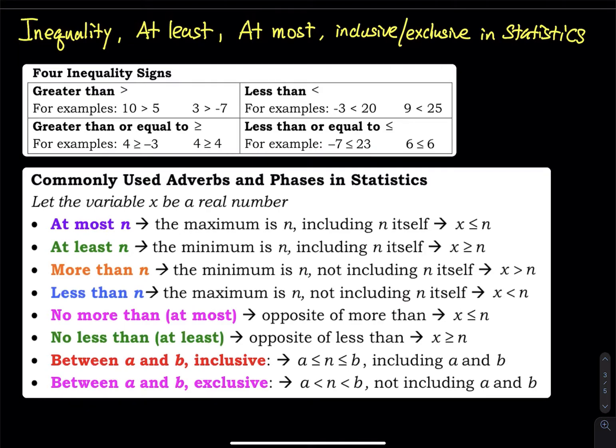The first sign is greater than. Greater than is easy to interpret. 10 is greater than 5, 3 is greater than negative 7. One quantity is bigger than the other quantity. Less than is one quantity is smaller than the other quantity. Negative 3 is less than 20, 9 is less than 25. Very straightforward.